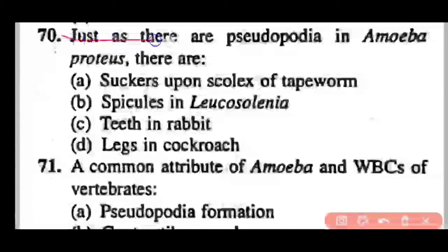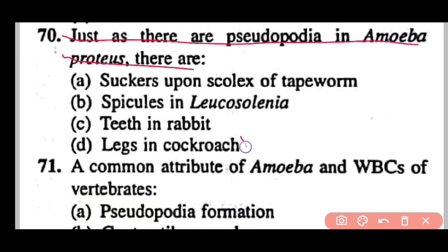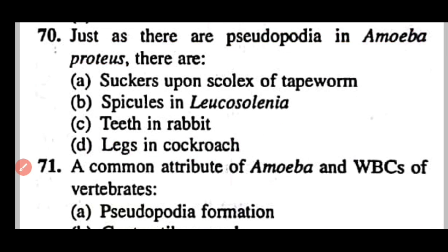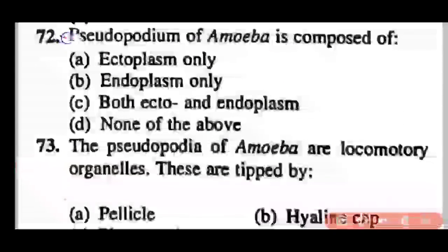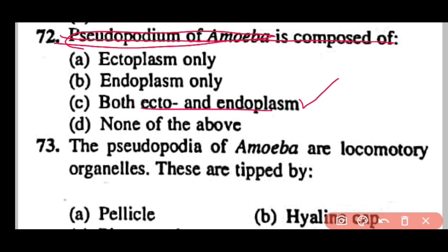Question 70: Just as there are pseudopodia in Amoeba proteus, there are suckers on the scolex of tapeworm, spicules in leucosolenia, teeth in rabbit, or legs in cockroach? Correct answer is option D. Pseudopodia is the locomotory organ of Amoeba; similarly, legs are the locomotory organ in cockroach. Question 71: A common attribute of Amoeba and white blood cells of vertebrates is that pseudopodia formation occurs (option A). Question 72: Pseudopodia of Amoeba are composed of both ecto and endoplasm (option C).